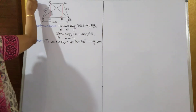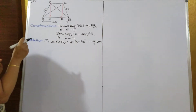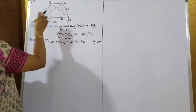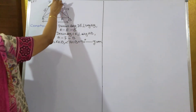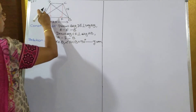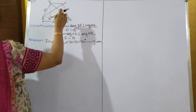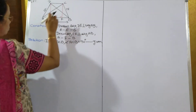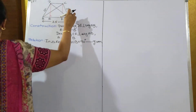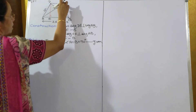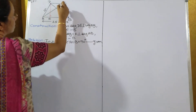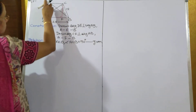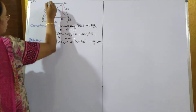Now question number 15. They have given trapezium ABCD where segment AB is parallel to CD. Segment AC is perpendicular to BC, meaning this angle is 90 degrees. And similarly, segment BD is perpendicular to AD, meaning this angle is also 90 degrees.